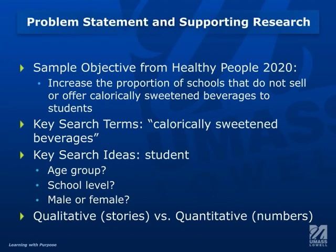The second idea might be students. What does that mean? Are we talking about a specific age group or school level? Are we looking at male versus female? Are we looking at a specific type of school, not just a grade level — so elementary school, middle school? Having all of these ideas will help you populate the search string, the terms that you put in those boxes, to find exactly what you want.